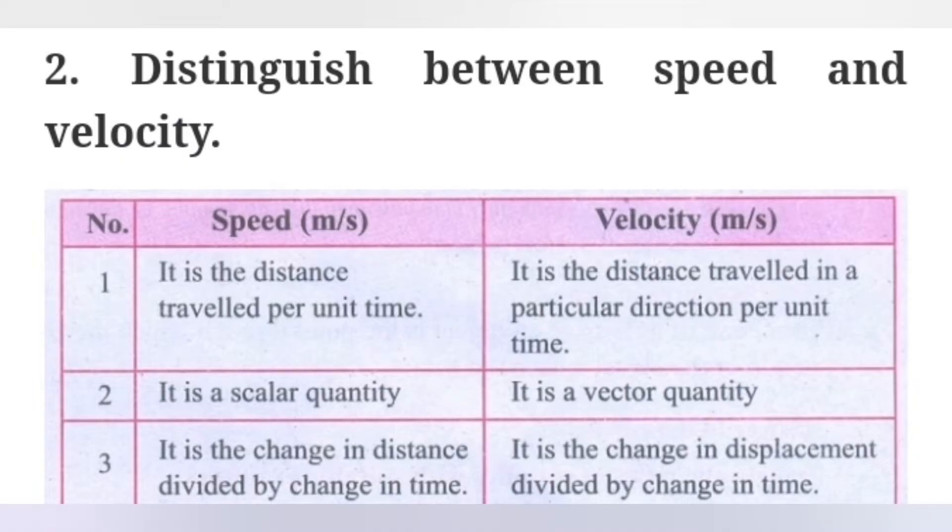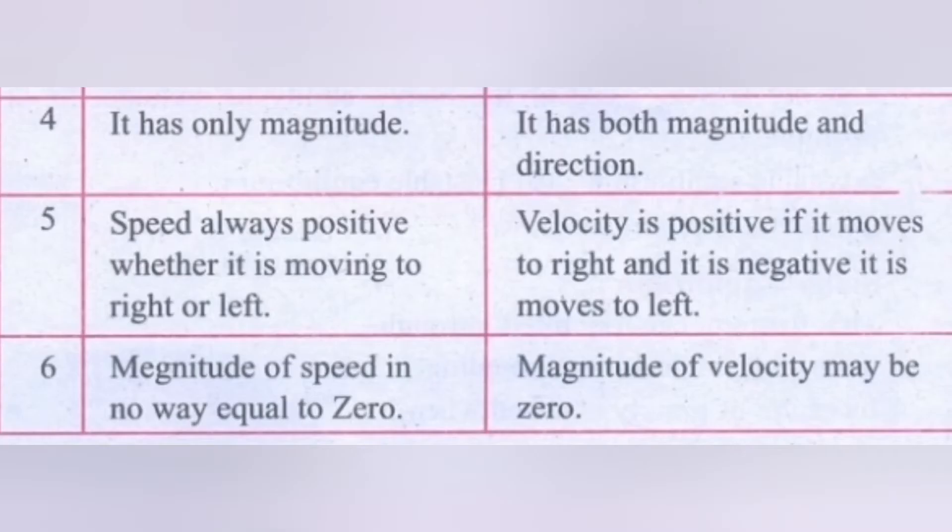Second question: Distinguish between speed and velocity. First point - Speed is the distance traveled per unit time. Velocity is the distance traveled in a particular direction per unit time. Second point - Speed is a scalar quantity. Velocity is a vector quantity. Third - It is the change in distance divided by change in time. Velocity is the change in displacement divided by change in time. Fourth point - It has only magnitude. It has both magnitude and direction. Fifth point - Speed always positive whether it is moving to right or left. Velocity is positive if it moves to right and it is negative if it moves to left. Sixth point - Magnitude of speed in no way equal to zero. Magnitude of velocity may be zero.